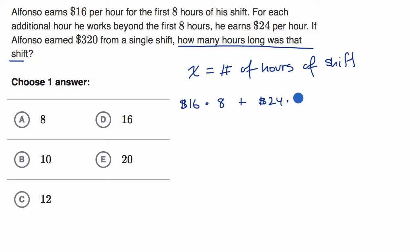Now what's going to be the remaining hours? You might be tempted to say X, but X would be his total shift. We're saying the remaining hours after he works the first eight hours. So the remaining hours would be X minus eight. So if, for example, X were 12, he's going to make $16 an hour for eight hours and then 12 minus eight, he's going to make $24 for the remaining four hours.